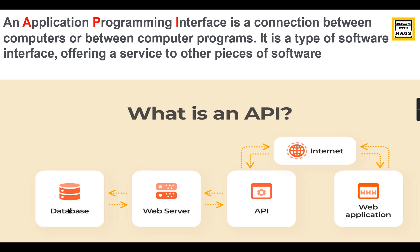From a web application you want to access this website or database, so API plays here — it acts as an interface between these two softwares. This is one application or software, and the web application is another software, and the API places an interface between them. In a Web API, the API is exposed on the web using HTTPS, and you make applications interact through it.